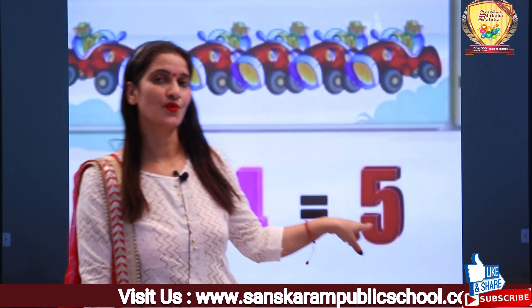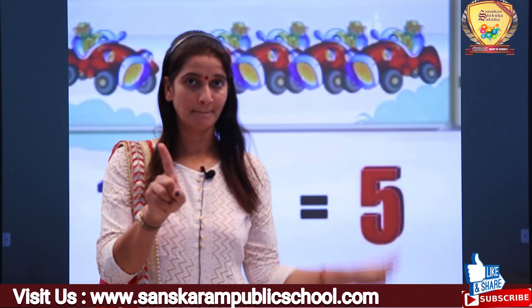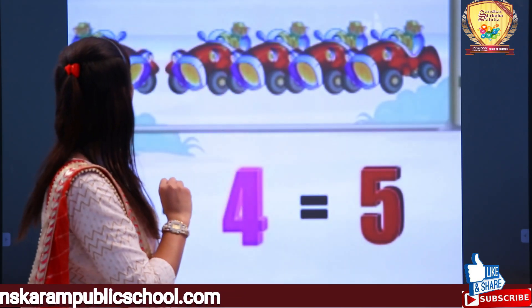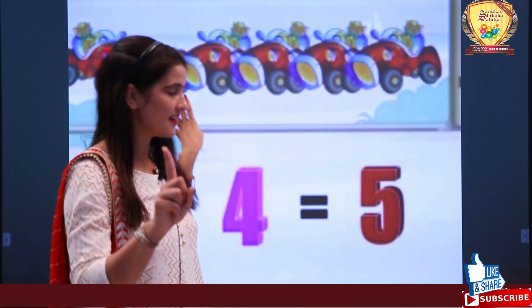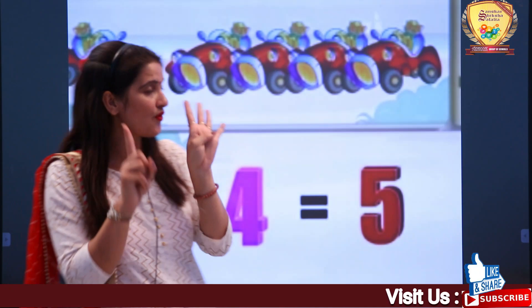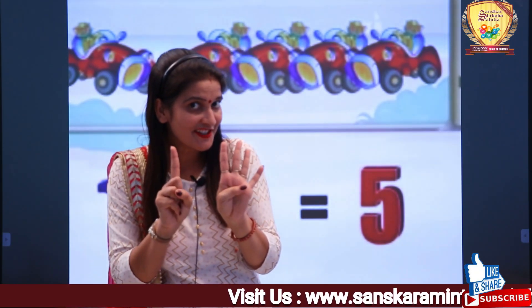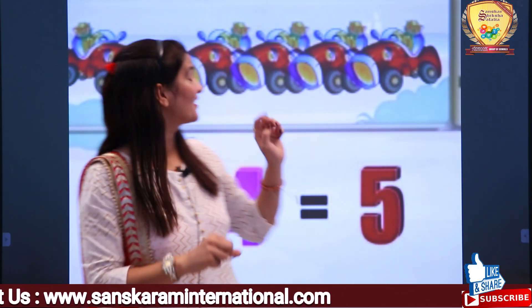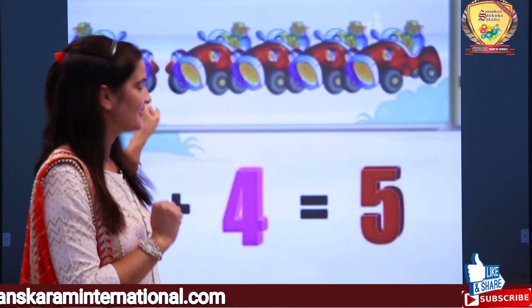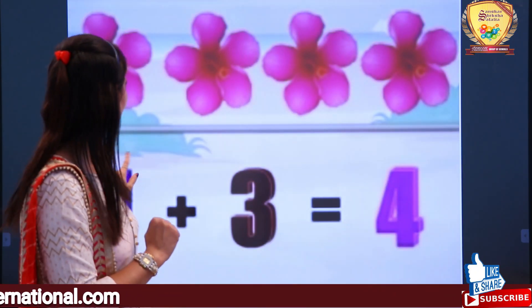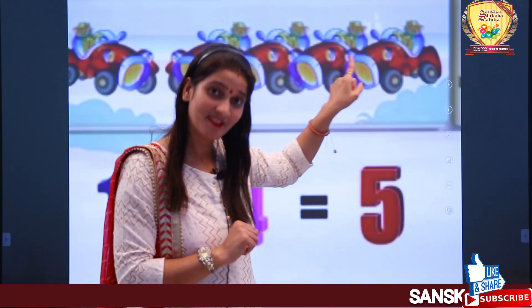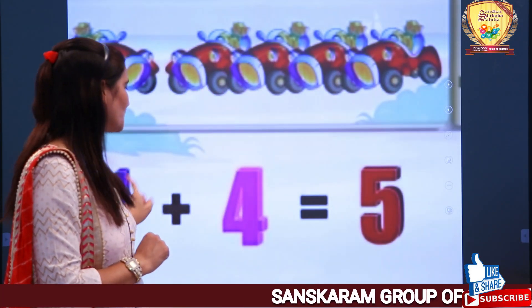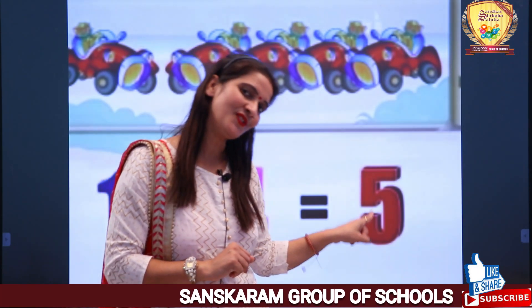1 plus 4. There is 1 car here, and 4 more cars are coming. How many cars are there now? Let's count: 1, 2, 3, 4, 5. Let's check — 1, 2, 3, 4, 5. Correct! It means 1 plus 4 is equal to 5.